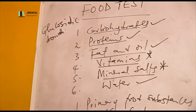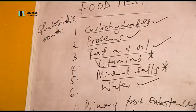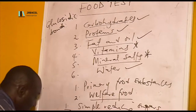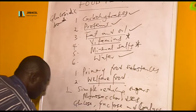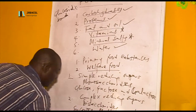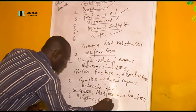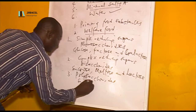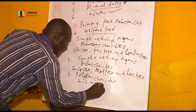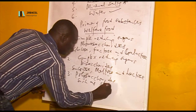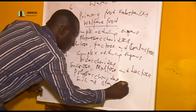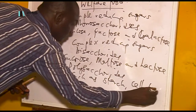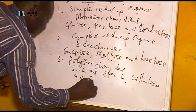Number three: polysaccharides, such as starch, cellulose, and glycogen.